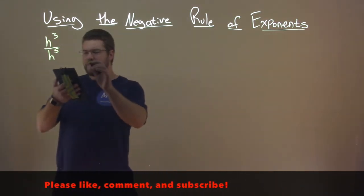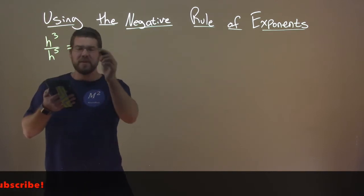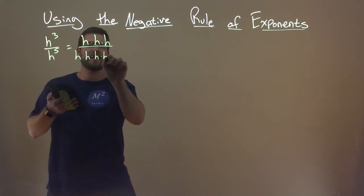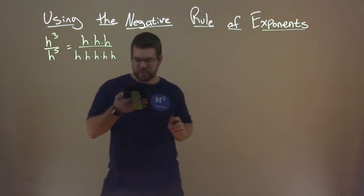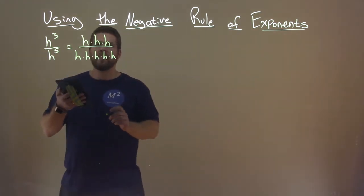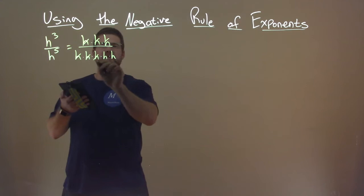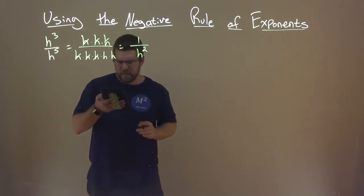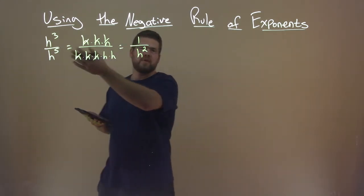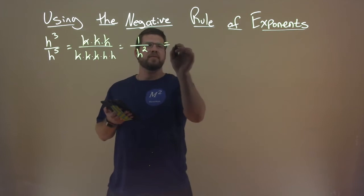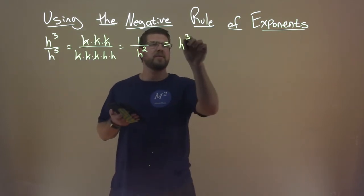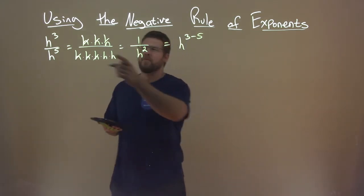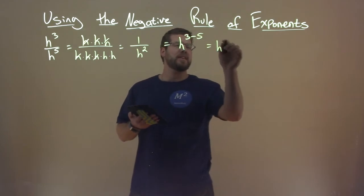Let's break this down. h to the third we know as h times h times h, and h to the fifth is h times h times h times h times h. The h's cancel, and we're left with 1 over just 2 h's, so that's h squared. Now if we used the quotient rule, we would subtract the exponents: h to the 3 minus 5 power, which is h to the negative 2 power.